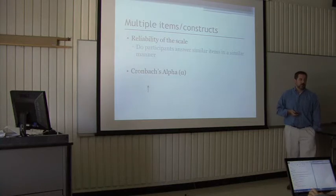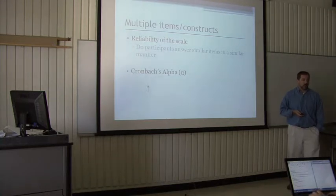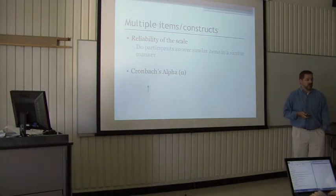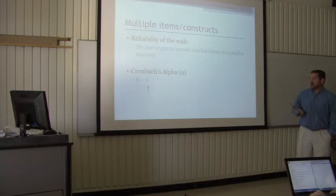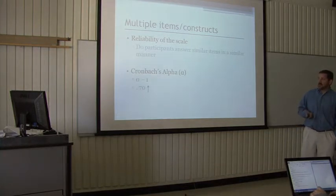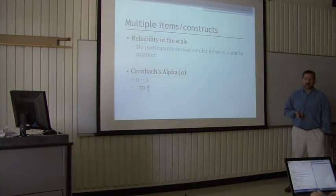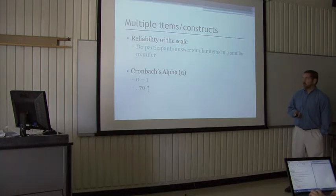With multiple items or constructs, you need to think about the reliability of the scale. Do participants answer similar items in a similar fashion? You look for Cronbach's Alpha when talking about reliability in surveys — it's on a 0 to 1 scale, and if it's 0.7 or higher, it's considered reliable. SPSS will calculate this for you.